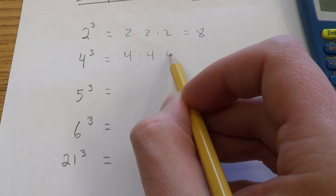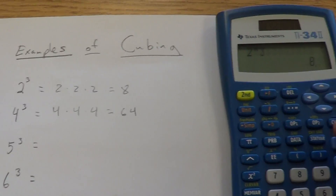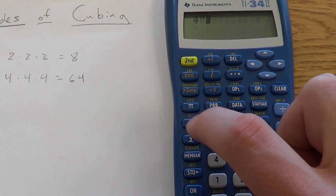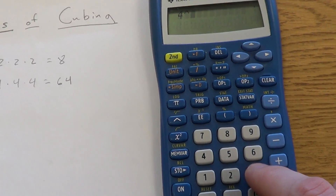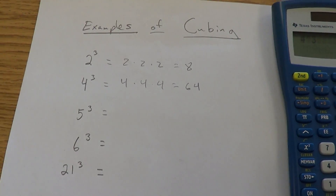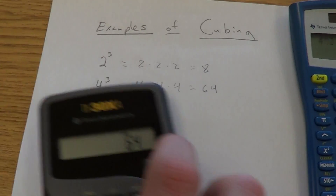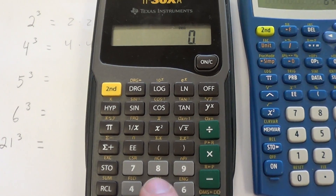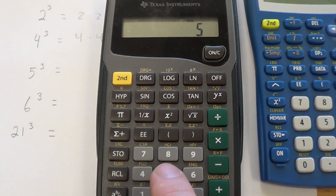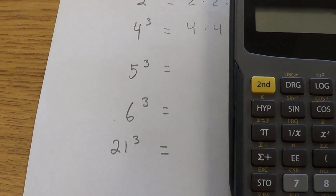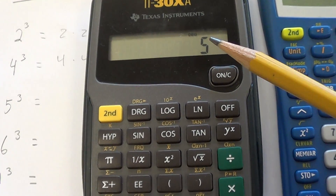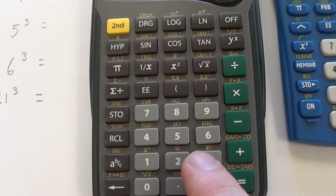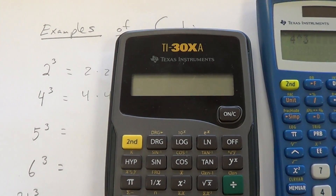4 cubed — we already did that one, that's 64. I'll show you again: type 4, hit the exponent button, type 3 because that's cubed, hit equals — 64. For 5 cubed, which is 5 times 5 times 5, I'll type 5 — that's the base, the big number — hit my exponent button, the calculator wants to know the exponent which is 3, hit equals, and I get 125.